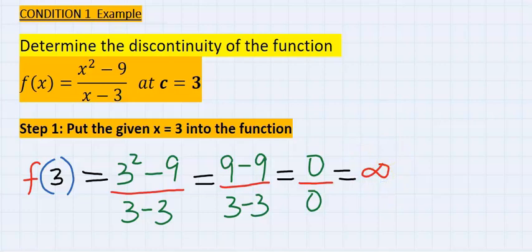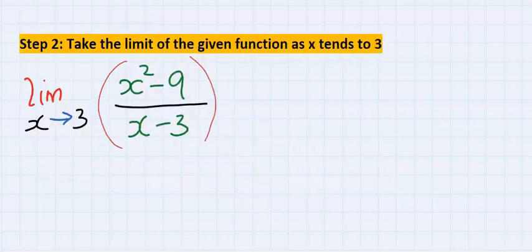To remove this discontinuity condition from this function, step number two, you take the limit of this function as x tends to 3.